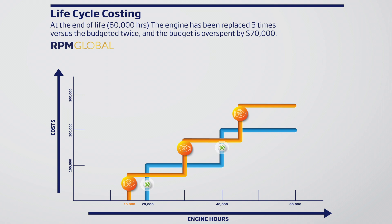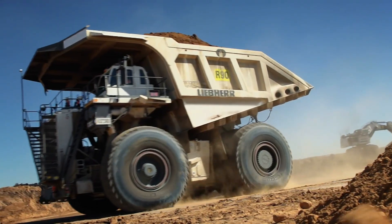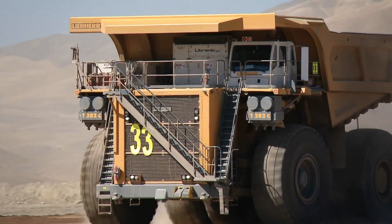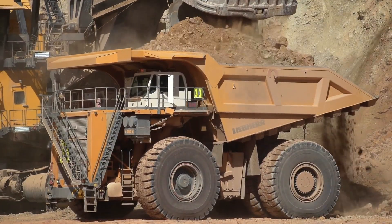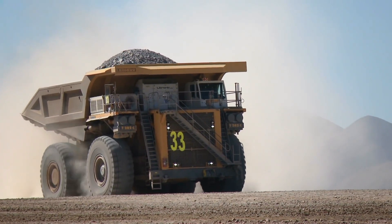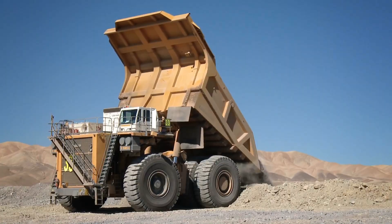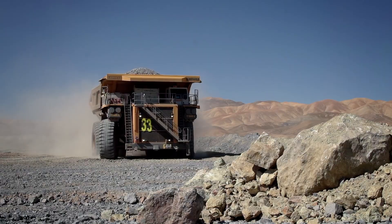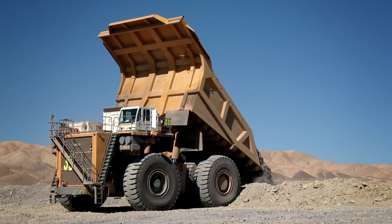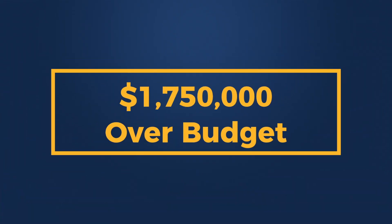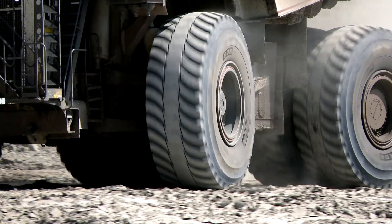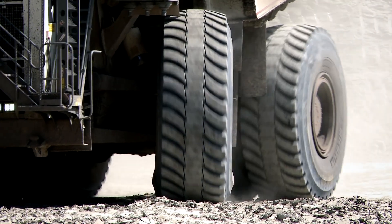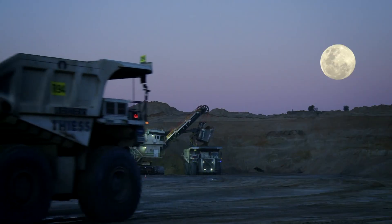Whilst this may not seem like a big issue for one piece of equipment, it may also seem that at 30,000 hours there isn't a huge over-budget variance. But when you scale this assumption to five trucks, which is $70,000 times five, you have an overspend of $350,000. For a fleet of 25 trucks, we are looking at $1.75 million over budget. If you have an additional engine change-out within every single truck's lifetime, it can amount to a considerable cost impact.